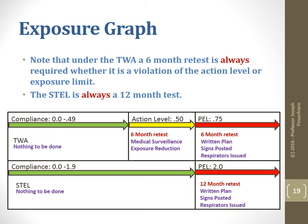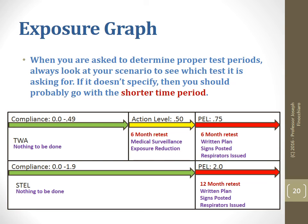The six-month retest is always required for the eight-hour test, whether it's a violation of the action level or the exposure limit. If you go and actually read the formaldehyde rule, it only mentions the 12-month test in reference to the short-term exposure limit. When you're given a scenario and asked to determine the proper test period, you need to see which one you fall in. If it's asking for a retest in regards to the time-weighted average, you know it has to be a six-month test if it falls into the action level or PEL categories. If it's only a violation of the short-term exposure limit, it falls into a 12-month test.